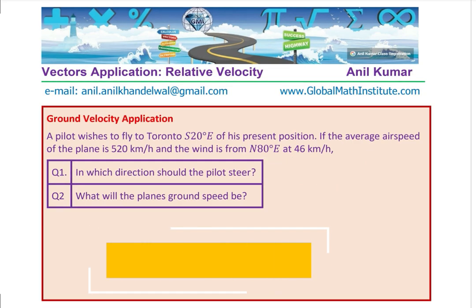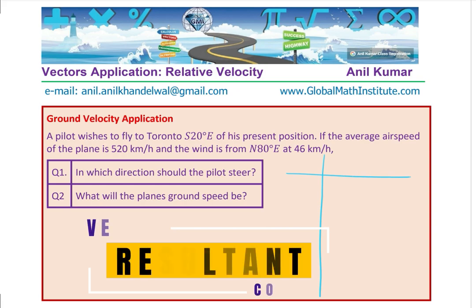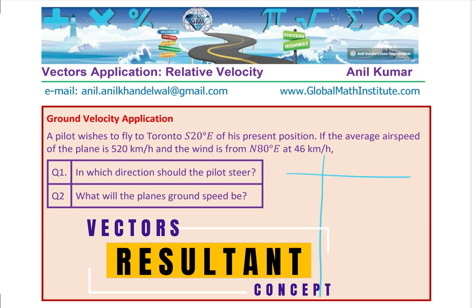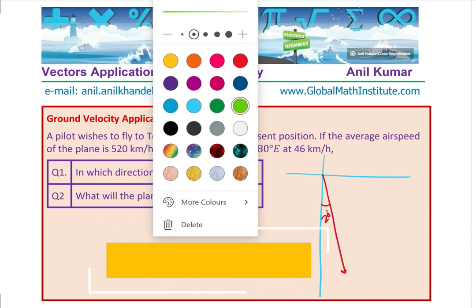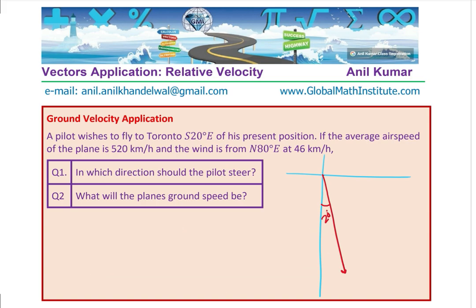Let me again sketch the diagram, this time making a slightly bigger diagram. We are given that the destination is 20 degrees east of south, and the wind is coming from north 80 degrees east. That is the wind direction, so this angle is 80 degrees.